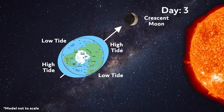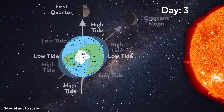About three days into the moon's orbit, we are able to see a little sliver of moon. This is because of the way the light from the Sun hits the moon while in this position. This phase is called crescent moon. At this point, the water is receding and about to be pulled back for a low tide.